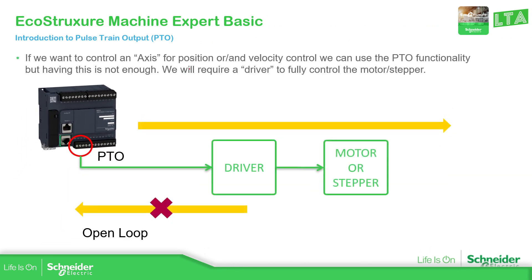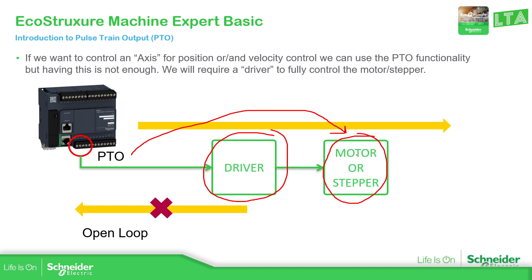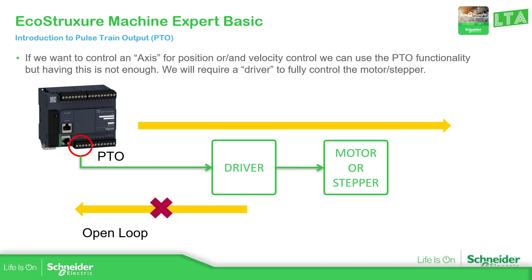Knowing that, what we need in order to control a motor or a stepper is a driver. We cannot directly connect the PTO outputs directly to the motor or stepper. When we connect the output of the controller, it just controls the driver, but we don't have any feedback — so this is an open loop. For example, if we want to know the exact position, we can use an encoder connected to the pulse input of the PLC.